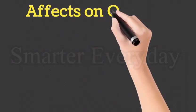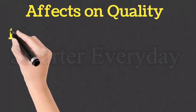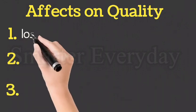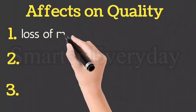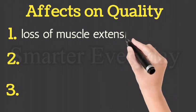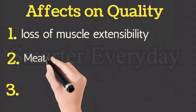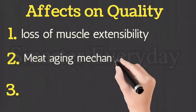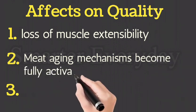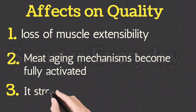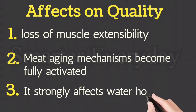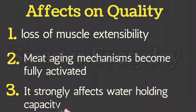Effects on quality: 1. Loss of muscle extensibility. 2. Meat aging mechanisms become fully activated. 3. It strongly affects water holding capacity.